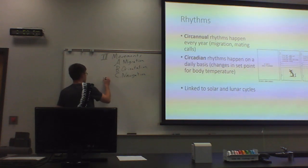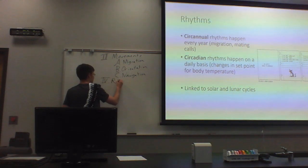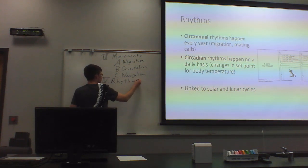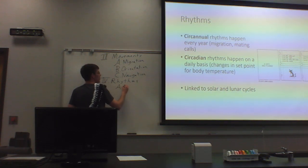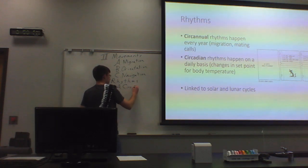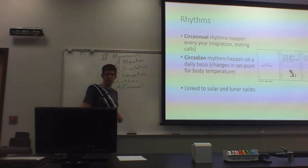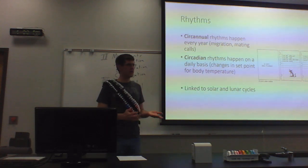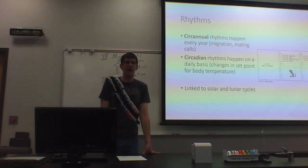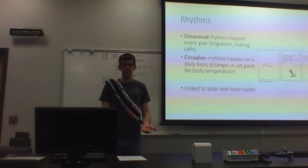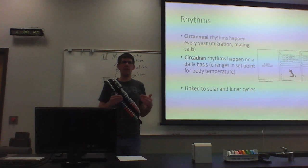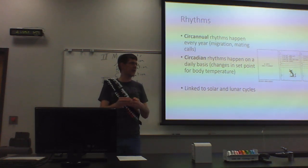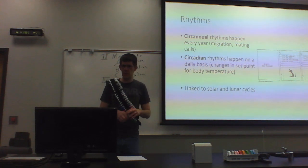Rhythms. Circadian and circannual. Circannual rhythms happen every year. So migration, mating calls every year. The deer, there's a pregnant deer out there and she gets pregnant every fall when the bucks have their antlers, when the bucks are doing their fighting. They have this behavior that is circannual, just kind of goes in a yearly rhythm where the fawns will come out the same time every year.